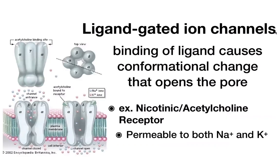A gated ion channel allows rapid flux of inorganic ions in response to a stimulus. An example is the nicotinic acetylcholine receptor, which is permeable to both sodium and potassium. It has multiple subunits with an acetylcholine binding site. Initially the channel is closed — things can enter from outside but can't get through to the inside. When acetylcholine binds, it changes the shape, opening the gate and allowing ions to flow through, helping nerves communicate.